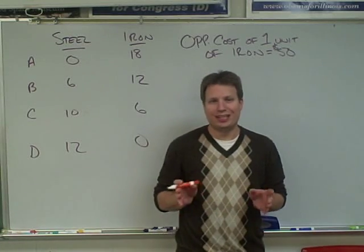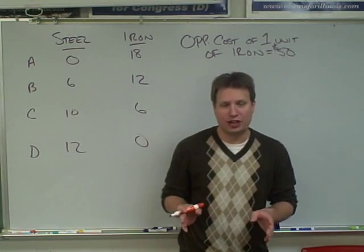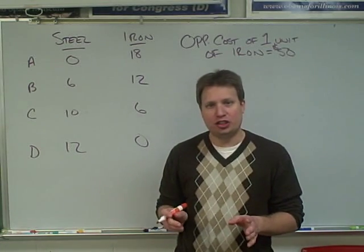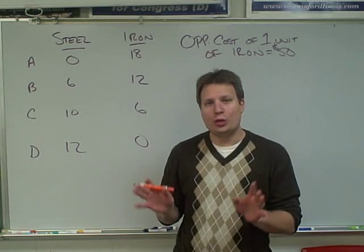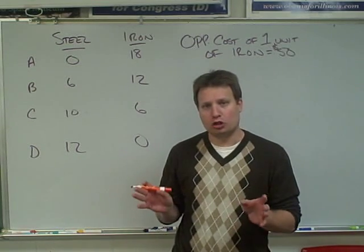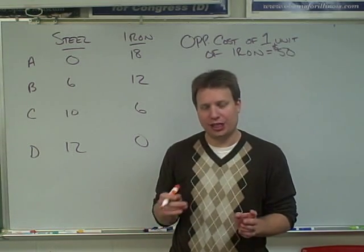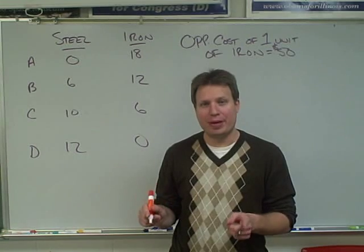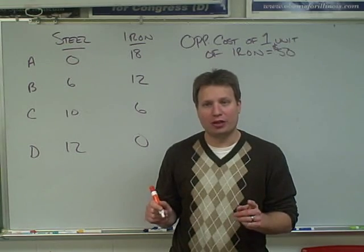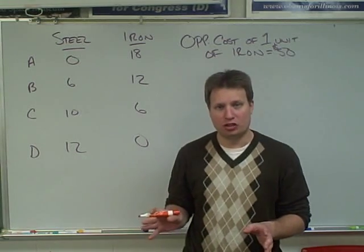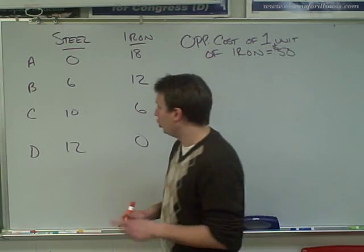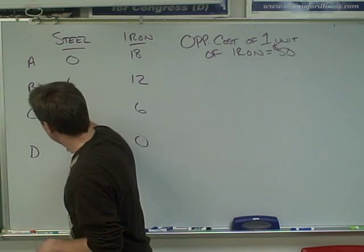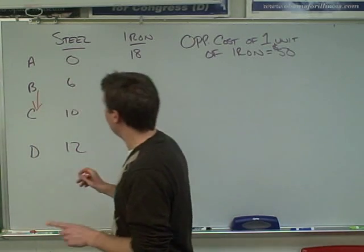So now what we're going to do is the next part of the assignment. In this situation, we are moving from alternative B to alternative C. The easiest way to do this is to make sure you mark this where the numbers are on your sheet. So the first thing is we want to know we're going from B to C.